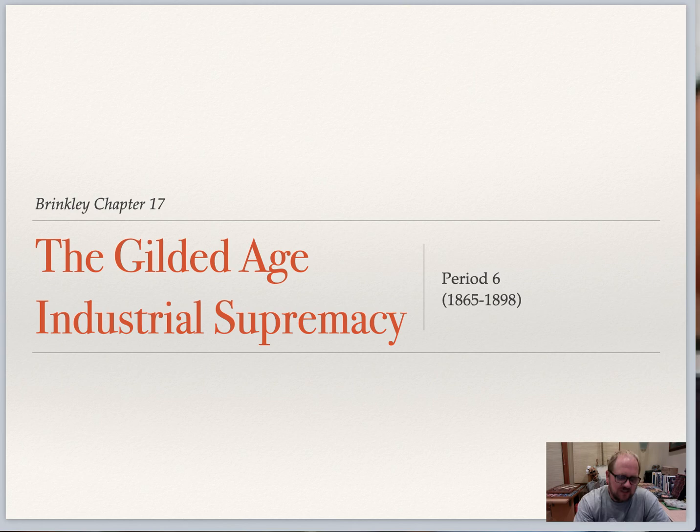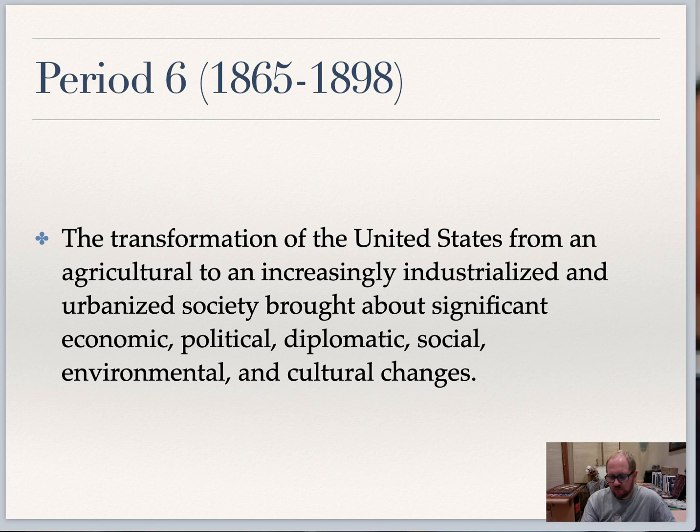Welcome everyone. We are going to be looking at chapter 16, the rise of industrial America in the US between 1865 and pretty much the early 1900s. This also will start in period 6, which takes us from the Civil War up to the 1900s. The focus is going to be really the transformation of the United States into a more industrialized, urbanized society.